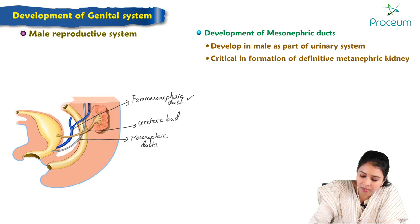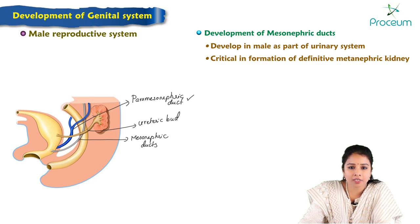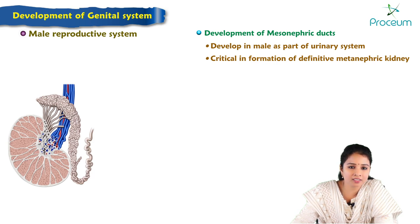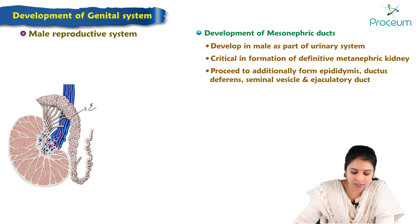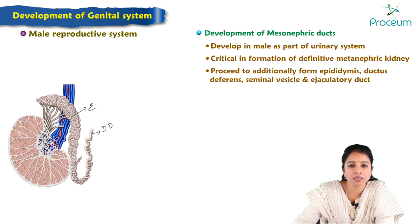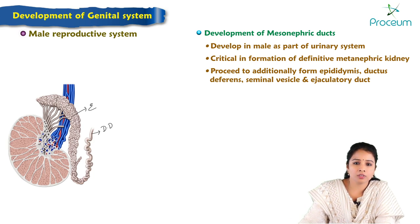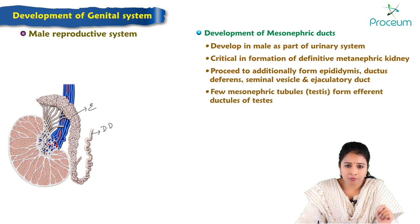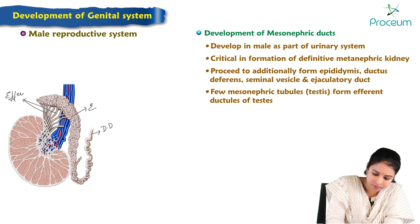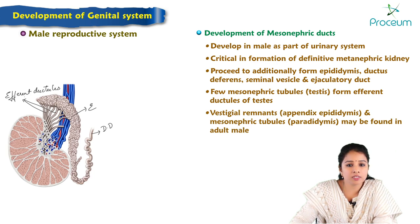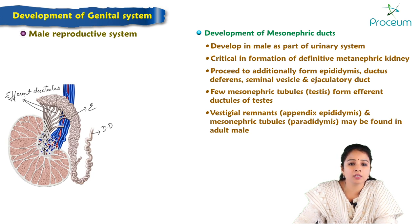The mesonephric duct forms the ductal system of the male reproductive system. Its derivatives include the epididymis, ductus deferens (vas deferens), seminal vesicles, and ejaculatory ducts, which open near the prostatic part of the urethra. A few mesonephric tubules in the region of the testis form the efferent ductules. Vestigial remnants of the mesonephric ducts form the appendix of the epididymis, and mesonephric tubules called the paradidymis may be found in the adult male.